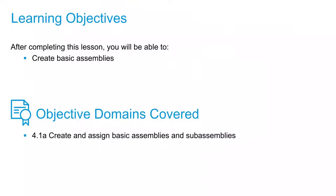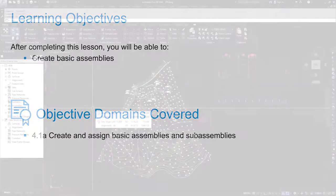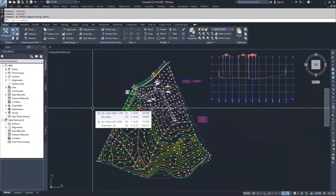In this video, we're going to kick off our discussion on the creation of corridors in Civil 3D. But before we can create any corridors, we first have to have the backbone to a corridor, which is an assembly.